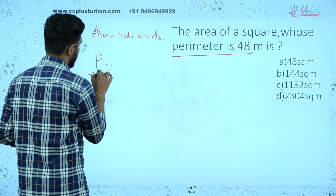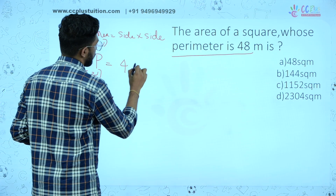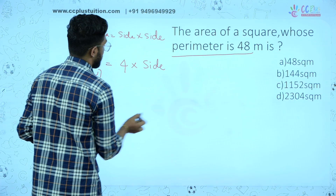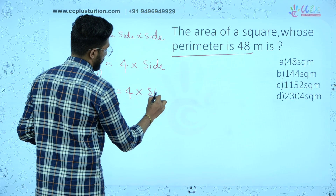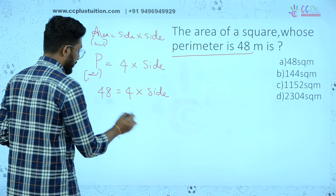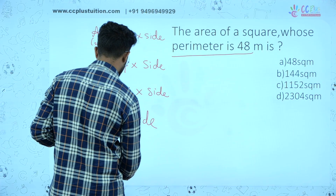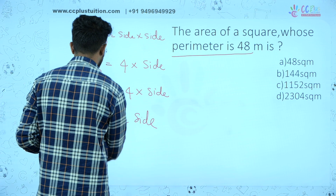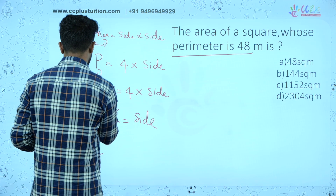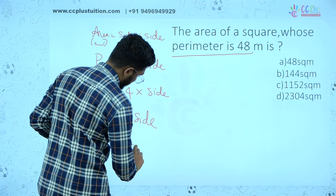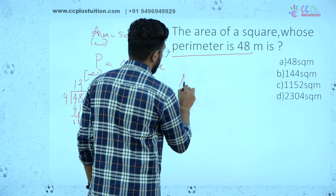Perimeter equation is 4 into the side. So 48 = 4 into side. Dividing: 48 divided by 4 gives side = 12. The side is equal to 12.